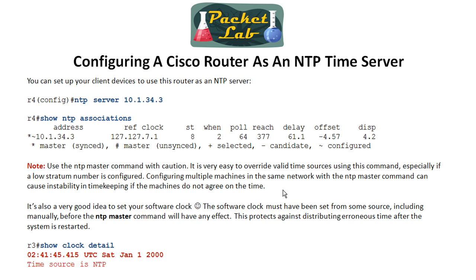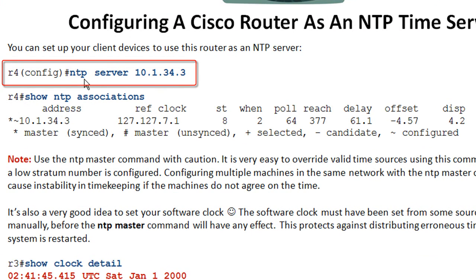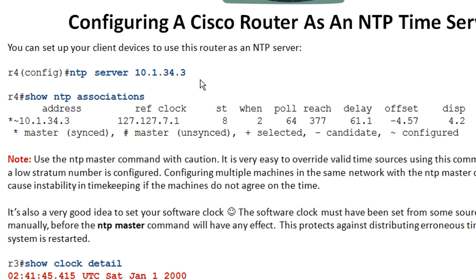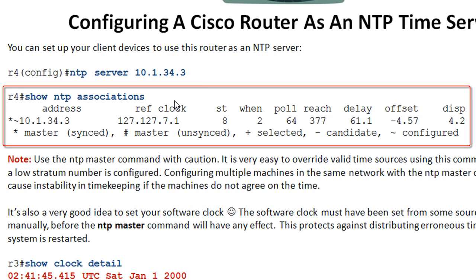Once you have the master set up, go to another router — here we use R4 — and configure it as a client to R3, which we've set up as the master. When you do `show ntp associations`, you can see it's associated to R3 and the reference clock is the 127 address, meaning R3 is getting time from itself. The stratum is 8 and we're synced.